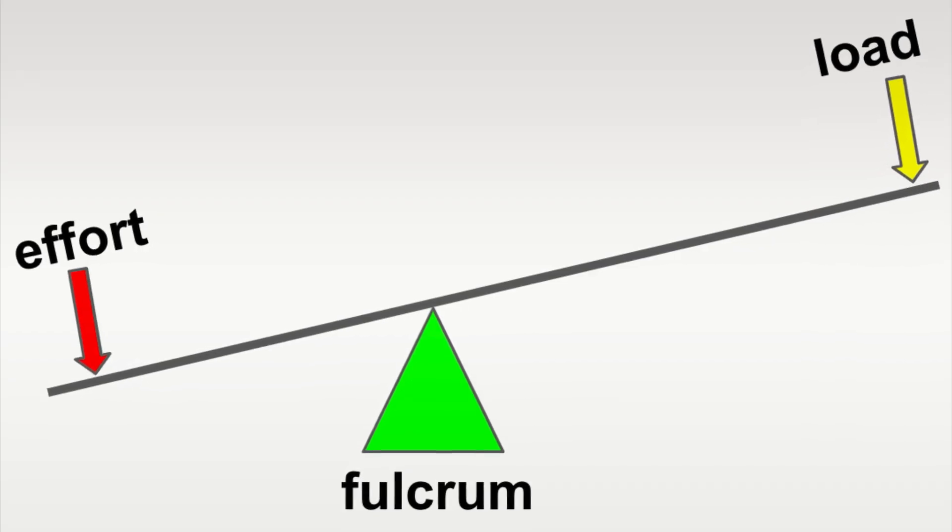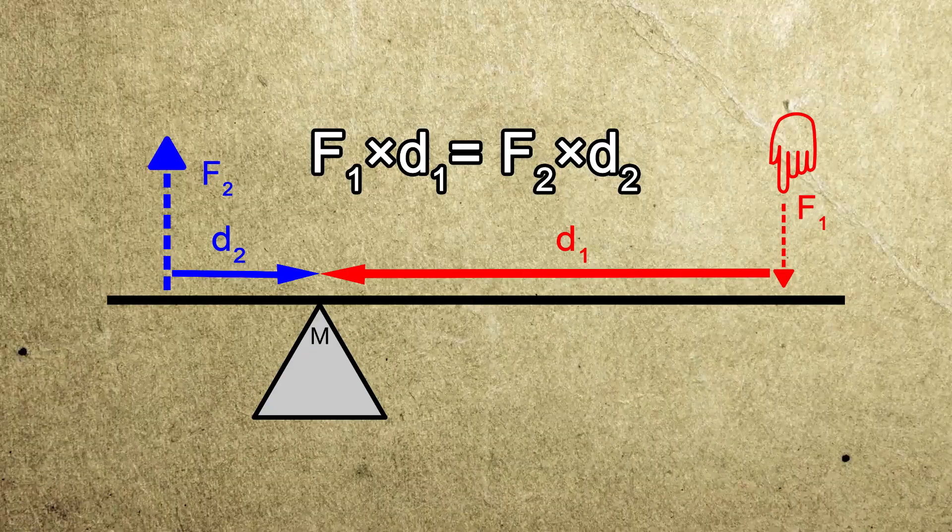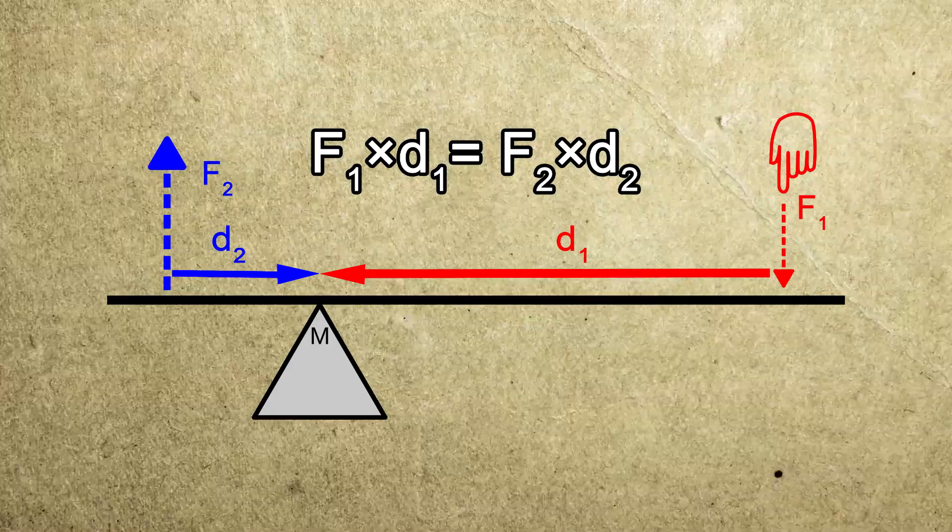In theory, if we have a very long lever, we can use a longer end to move very heavy objects to the other end. The equation of the lever is simply force one times distance one equals force two times distance two.